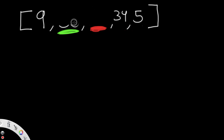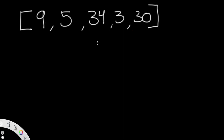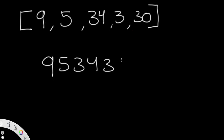For example, we compare 303 with 330 — 330 is bigger, so we swap to get 3 before 30. We continue this process: by each iteration we lock in the correct value for the current green position, and by the end we get the fully sorted result 9534330, which is our largest number.